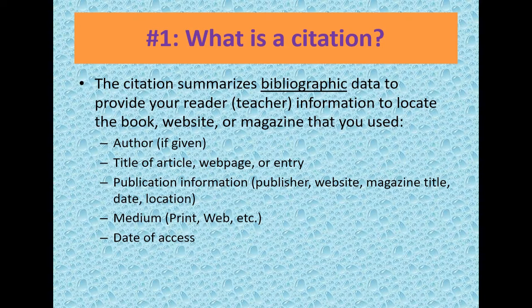The third element is publication information — including author, publisher, website, magazine title, date or location. Then medium: print, non-print or website. Then date of access. This is all the information that we need to give as bibliographic data.